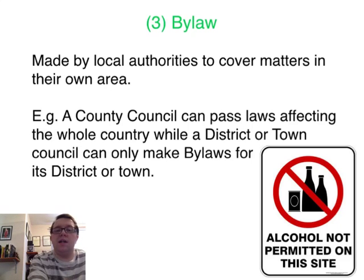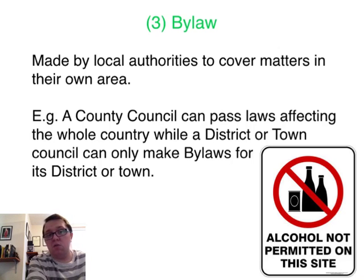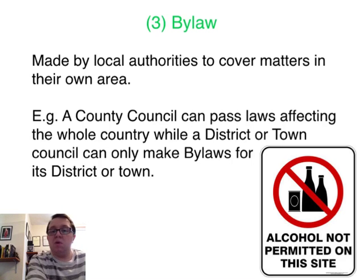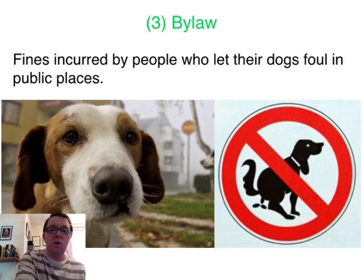The third and final type of delegated legislation is called a By-law. These are made by local authorities to cover matters only within their specific area. So for example a county council can pass laws affecting the whole county, while a district or town council can only make by-laws for its district or town, such as not permitting alcohol in a particular area. One final example of a by-law: fines incurred by people who let their dogs foul in public places. Thanks for watching.